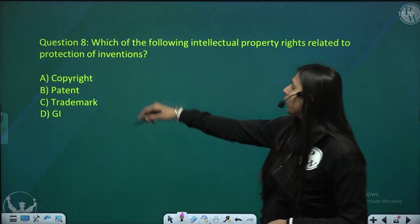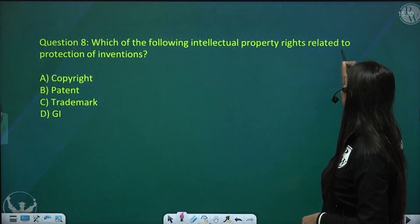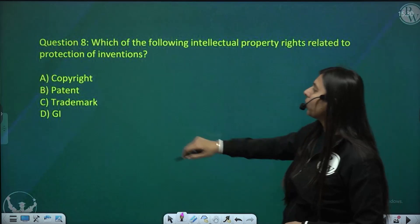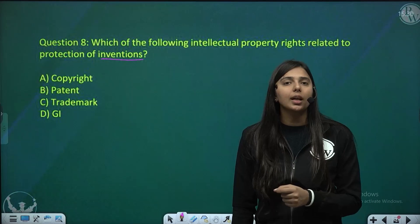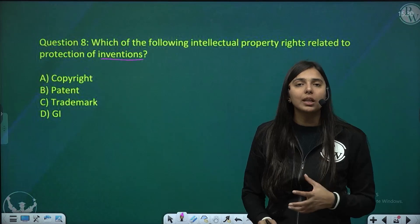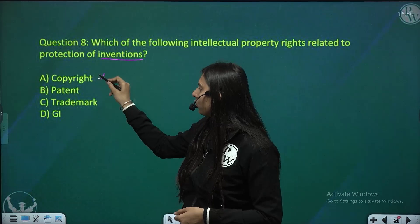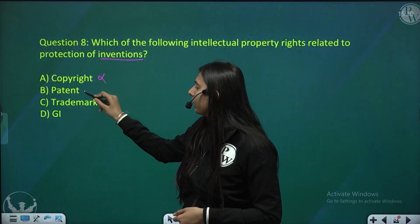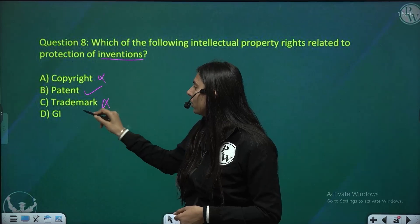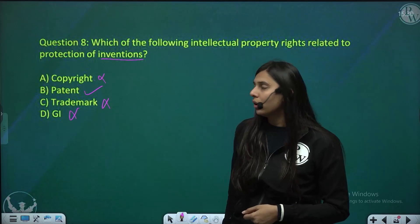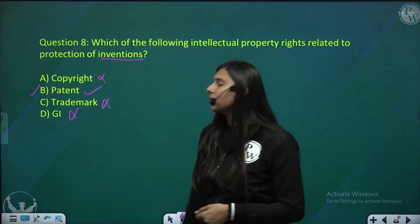Question 8: which of the following intellectual property rights relates to protection of inventions? Option A — copyright — no. Option B — patent — yes. Option C — trademark — no. Option D — geographical indication — no. The correct answer is option B, patent.